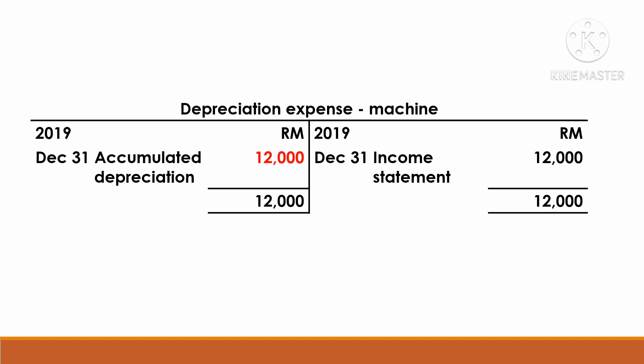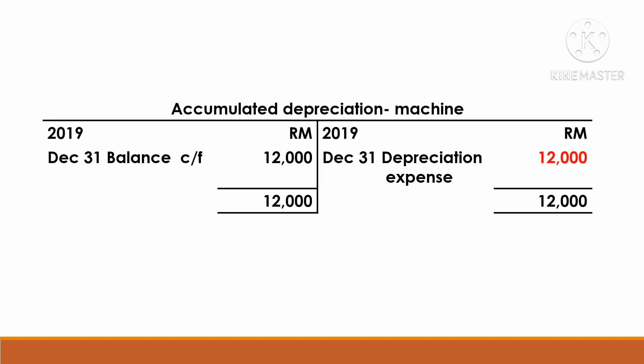At the end of the accounting period, you close the depreciation expense and transfer the amount to the income statement. You also prepare the accumulated depreciation account — this is the contra account to the asset. Accumulated depreciation is credited with the detail: depreciation expense RM$12,000. At the end of the accounting period, close the accumulated depreciation and calculate the balance forward.